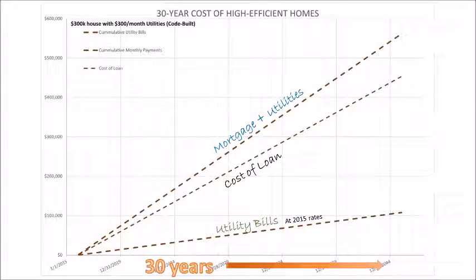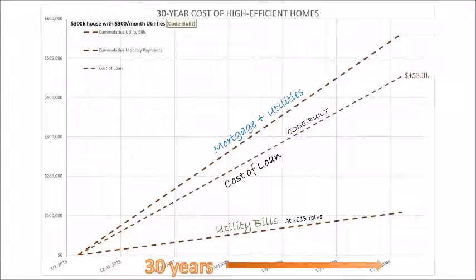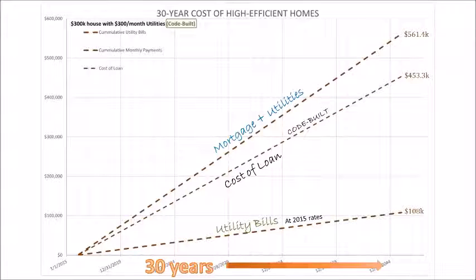First of all, this is a $300,000 house. It's code built. We can anticipate about $300 a month on utilities, which the cost of the loan then would increase to $453,000 or more. At constant utility rates — which is probably not the case — a minimum you'll spend is $108,000 over 30 years, so combined you are looking at over $561,000.